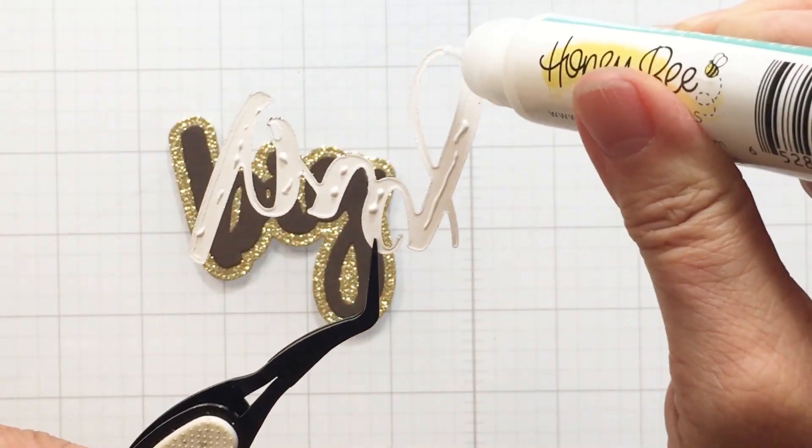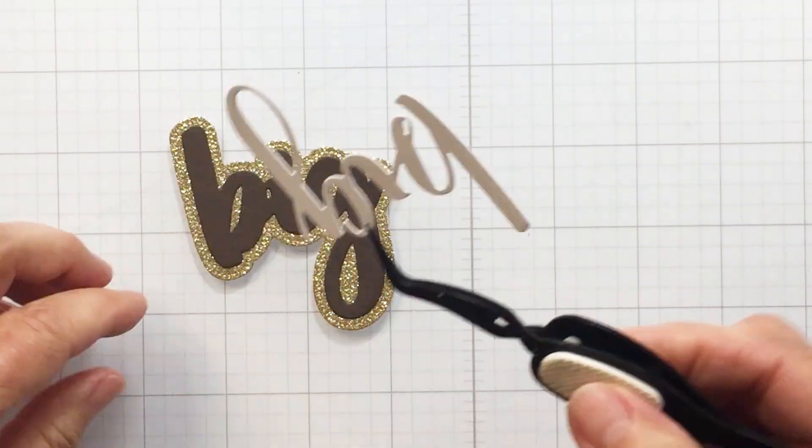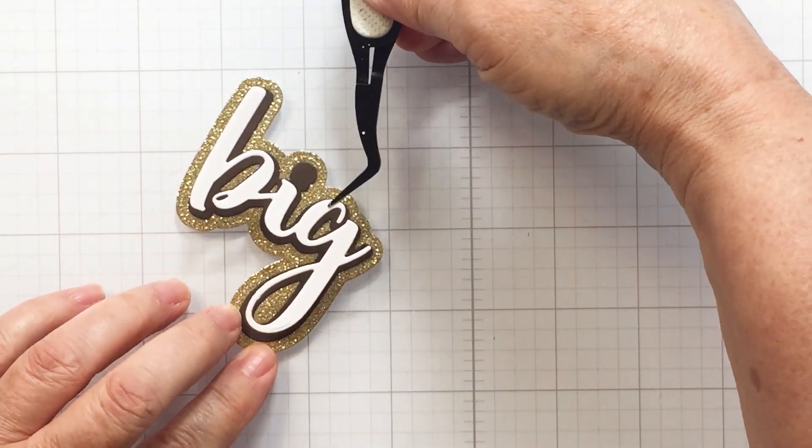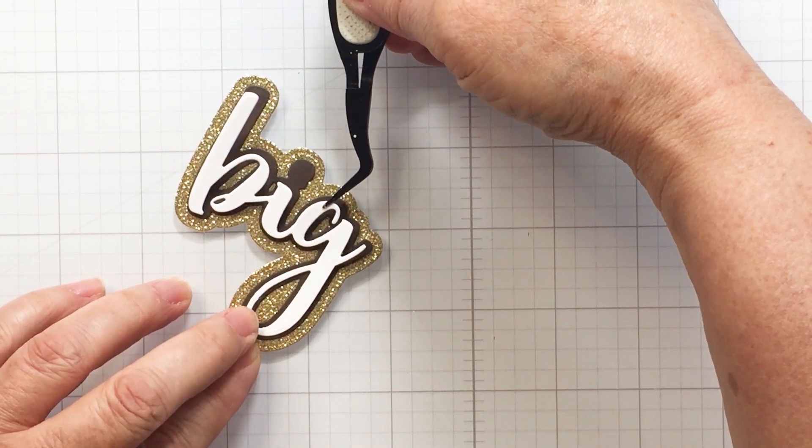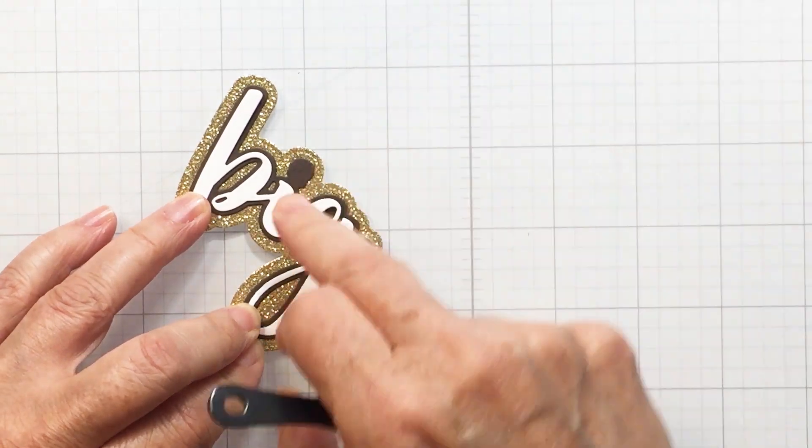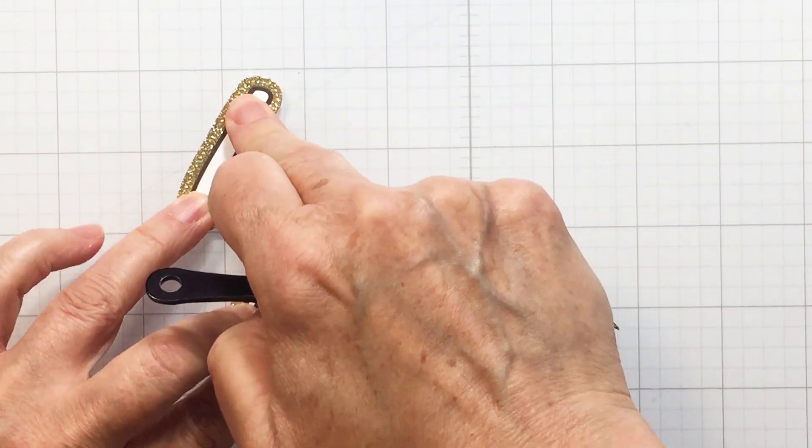Especially when it's going to be going on to some glitter cardstock, you definitely want to be using some liquid adhesive there. Here you can see I have my top layer which is that white 'big' and I'll add that dot to the i there and that will finish off my large portion of my sentiment here.